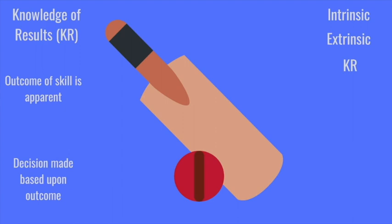You need to set up practice with the outcome present to get feedback from it. Practicing a free kick from 25 yards without a wall or goalkeeper is pointless — you won't know if you're getting the right height, bend, or if the goalkeeper could have saved it. You need all the correct components so you can get feedback from the outcome. That's using Knowledge of Results.